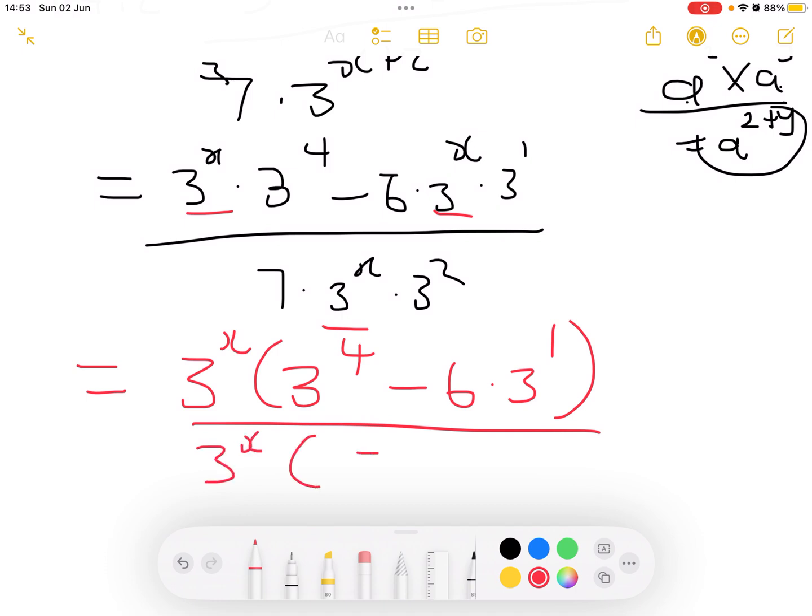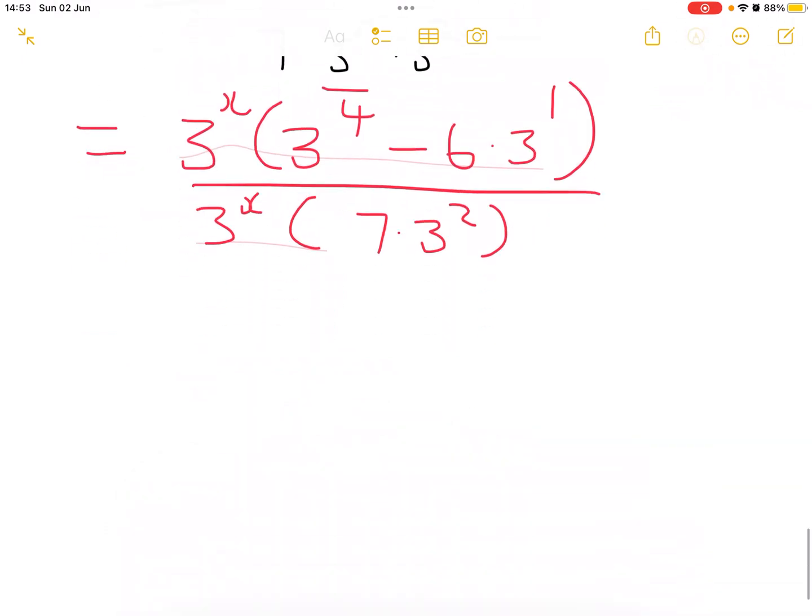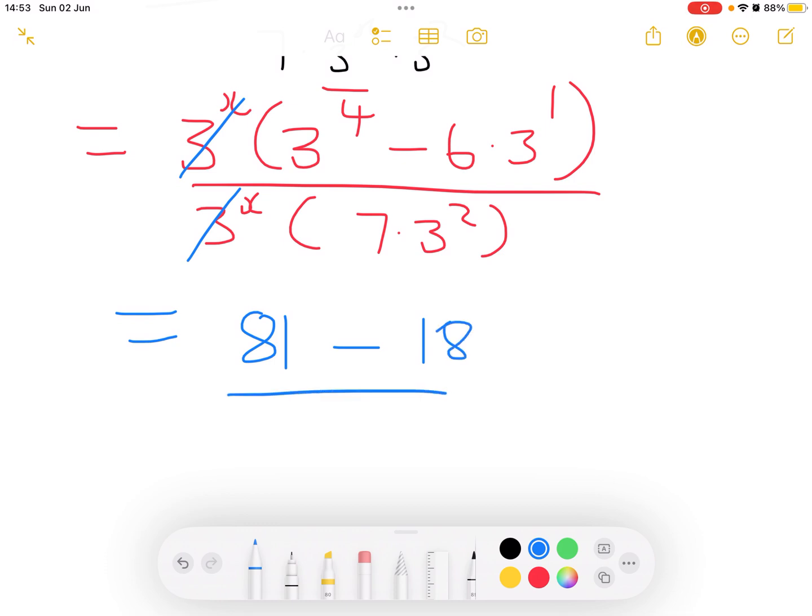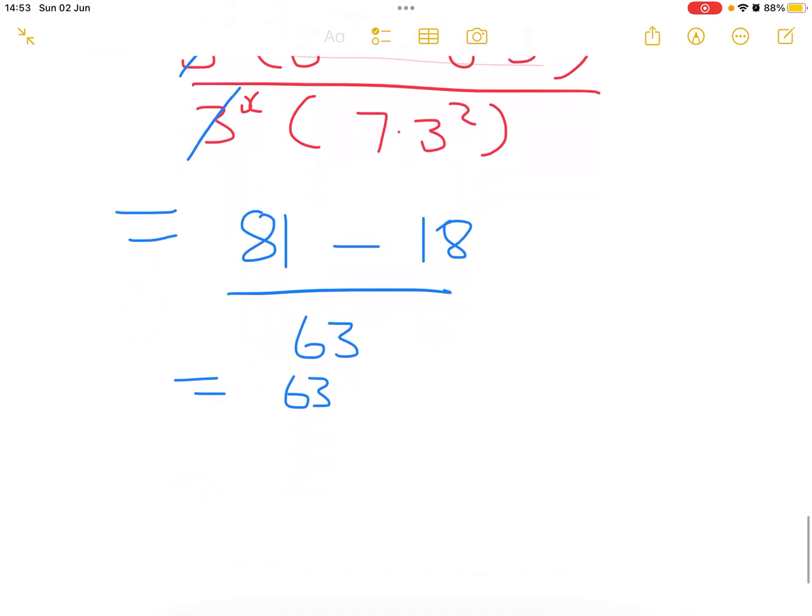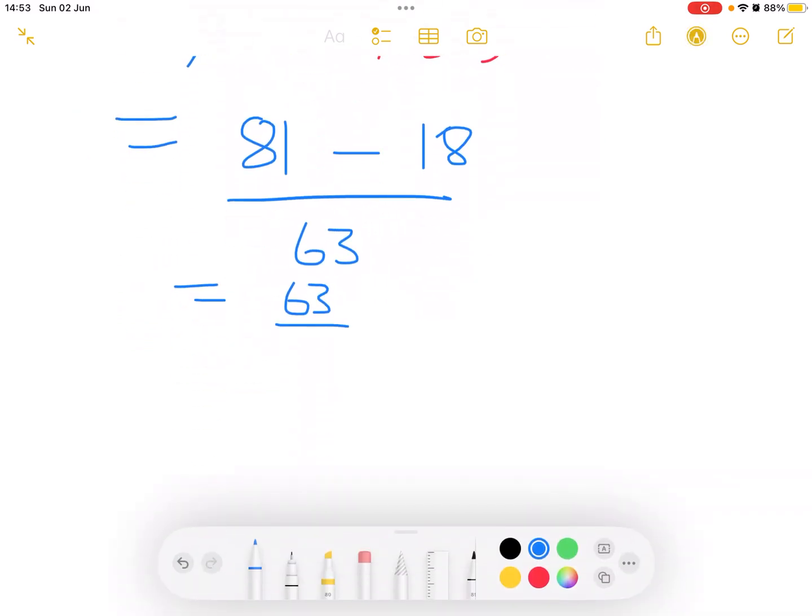These can divide such that you are left with 81, which is 3 to the power of 4, minus 6 times 3, which is 18, all over 7 times 9. That will become 63 over 63, and then this is equal to 1. Thank you for watching our video.